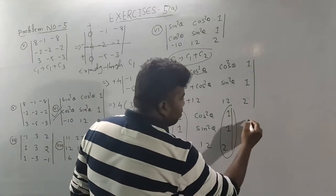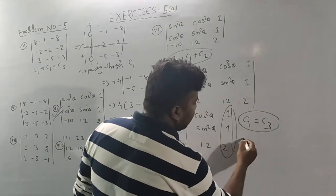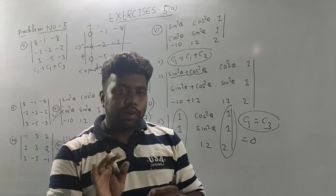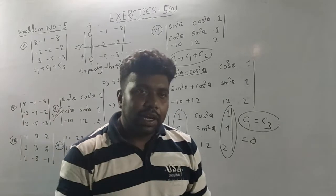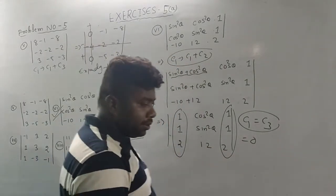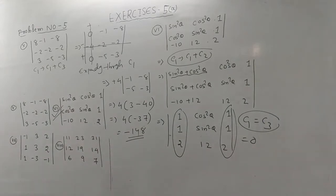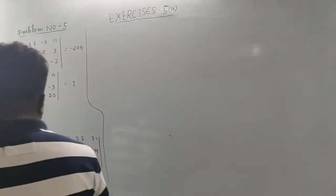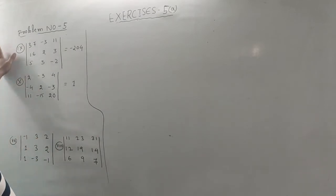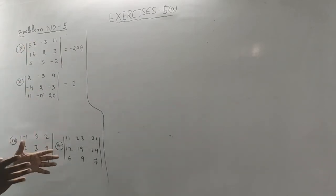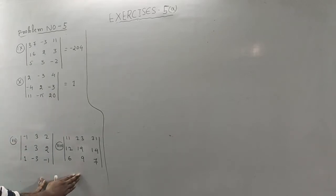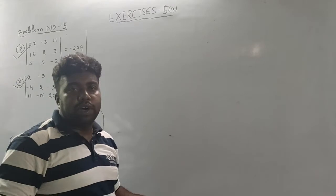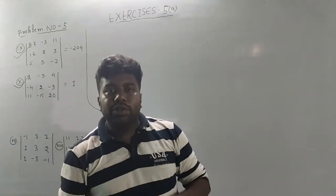Applying C1 plus C2: cos squared theta plus sin squared theta equals 1; cos squared theta plus sin squared theta equals 1; minus 10 plus minus 10; 12. Then C1, C2, C3 as it is. Using the property, the determinant is determined.